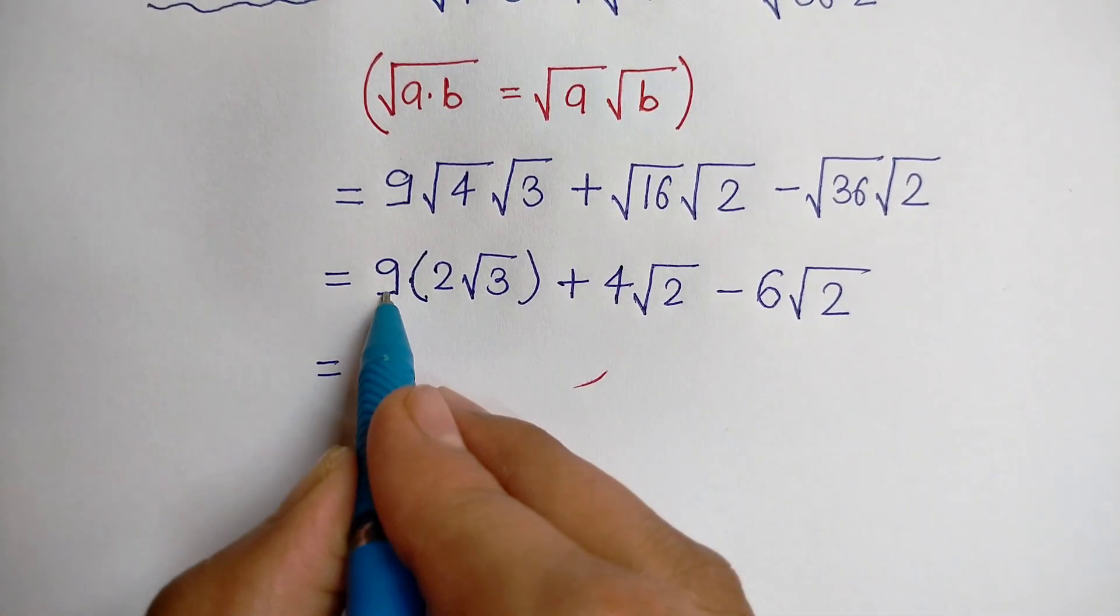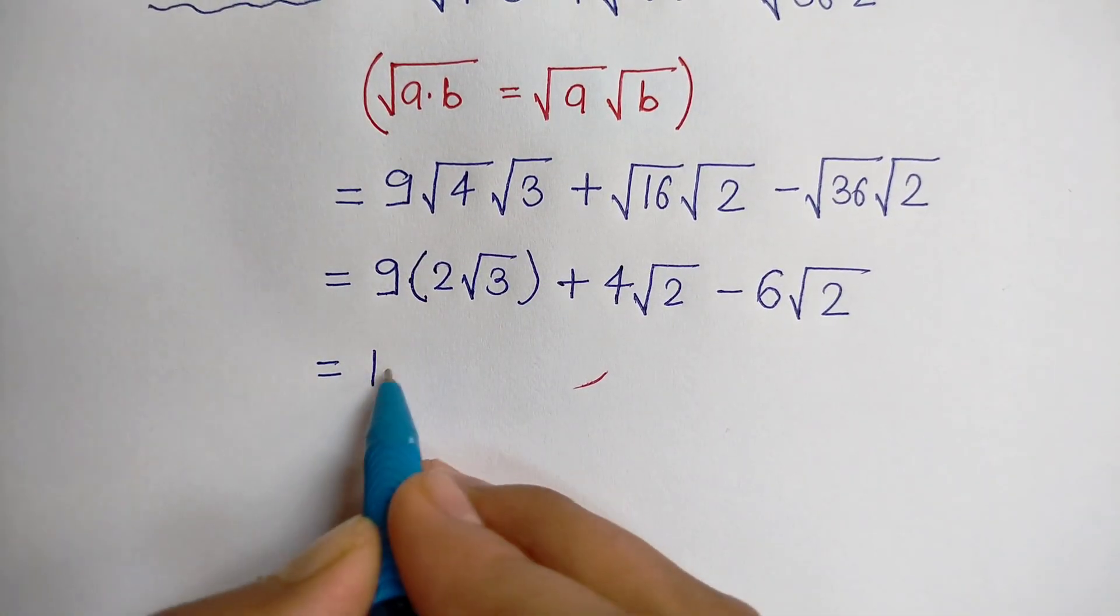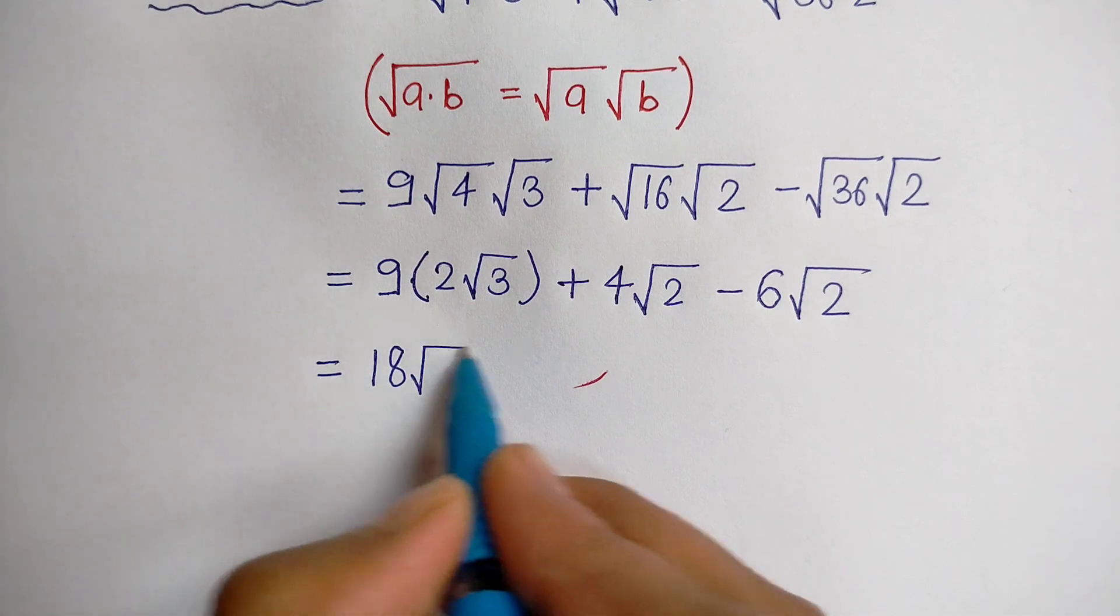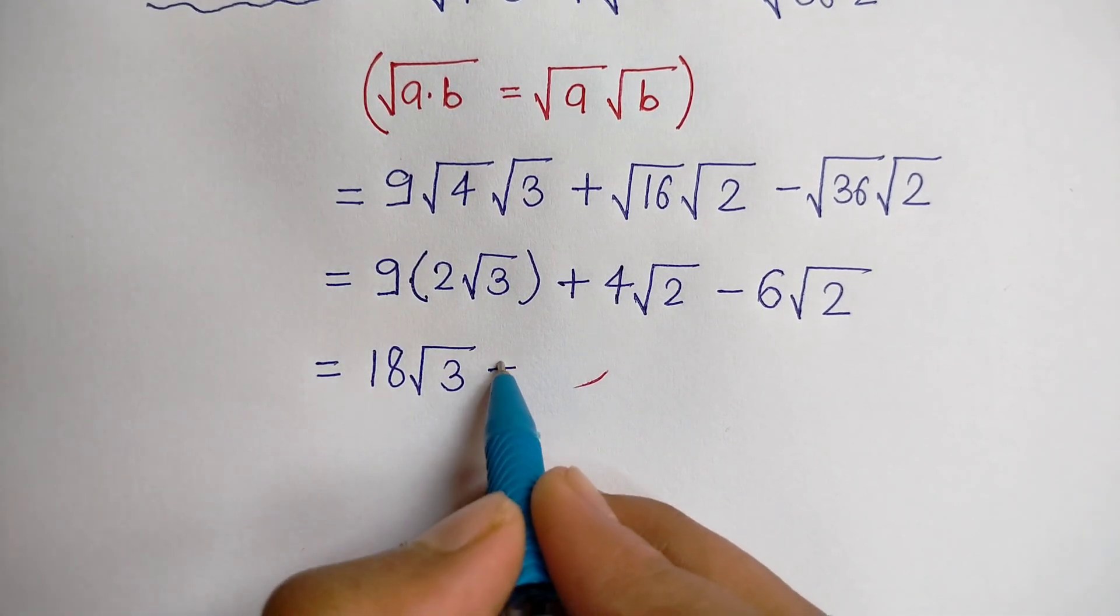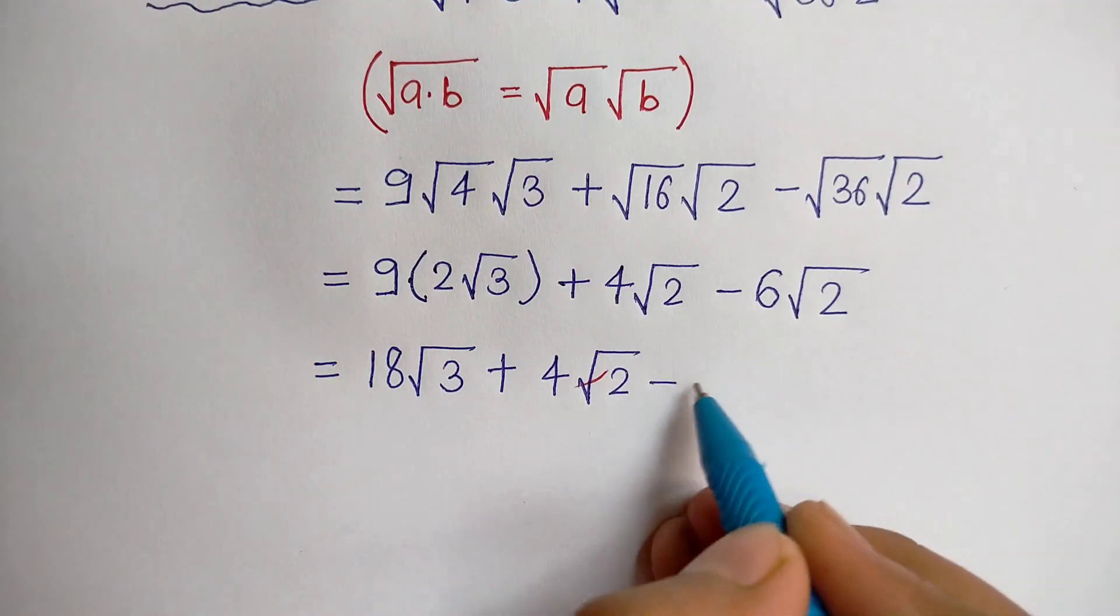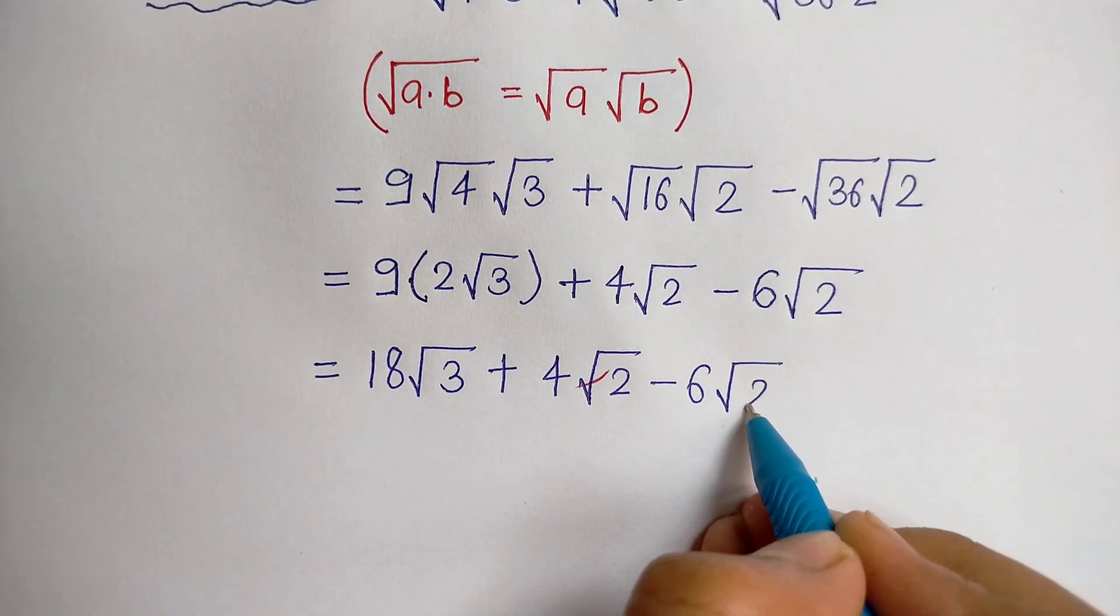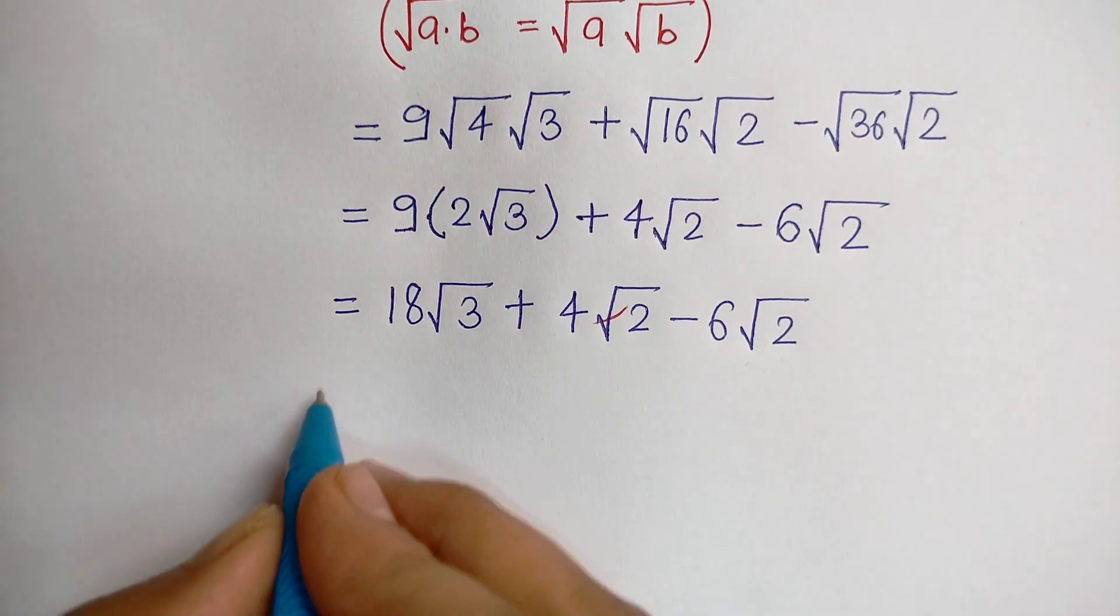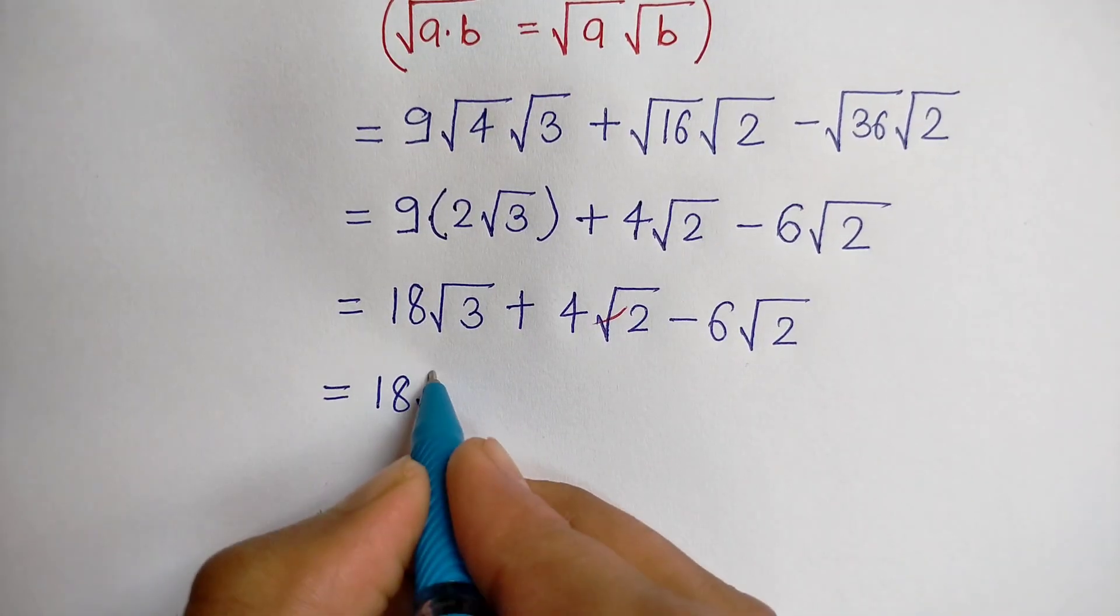Now 9 × 2 is 18√3 + 4√2 - 6√2. That equals 18√3.